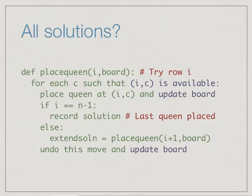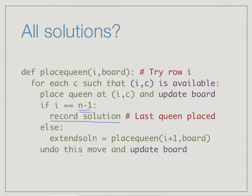As a final step, suppose we want not just one solution but all solutions. Rather than returning True the moment we find a solution, we simply keep going through all positions. Whenever we reach the final row and successfully place a queen, we print the board instead of returning True. This is actually simpler, because we don't need to track whether the solution extended — we just run through every possibility. The backtracking still prunes dead ends efficiently.